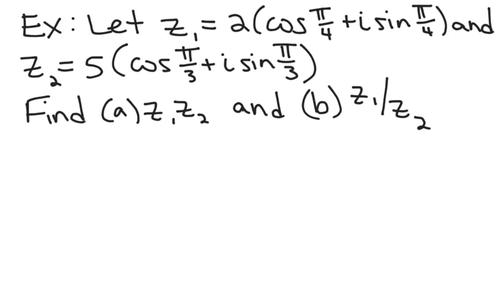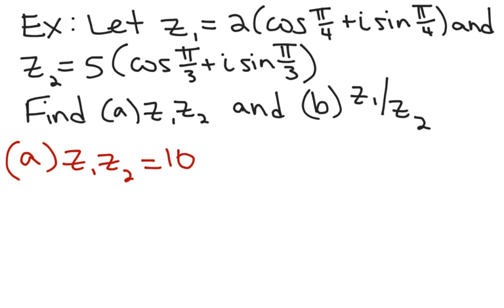Let the first complex number be 2 times cos(π/4) + i·sin(π/4), and let the second complex number be 5·cos(π/3) + i·sin(π/3). Find the product and the quotient of those complex numbers. To find the product, all I have to do is multiply the moduli together: 2 times 5 is 10. Then I add the angles: π/4 plus π/3 is 7π/12.